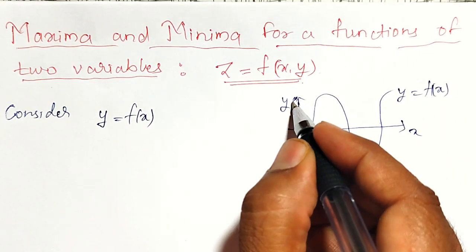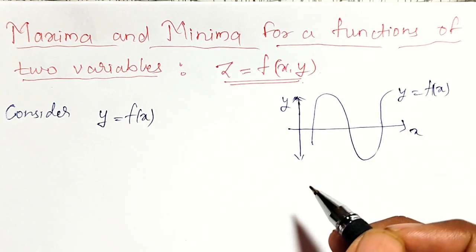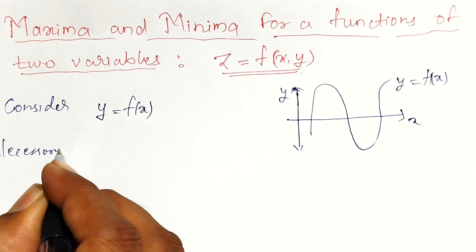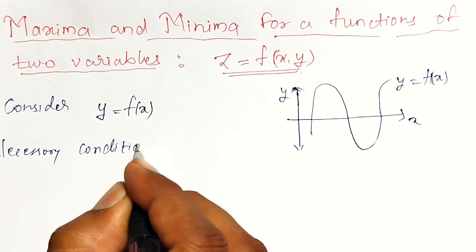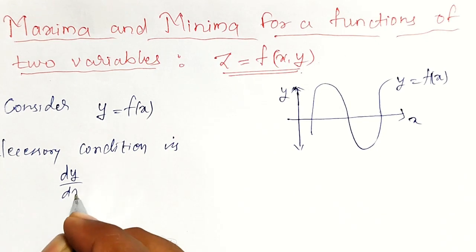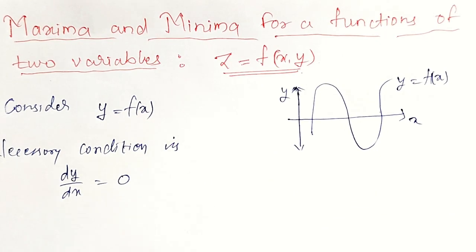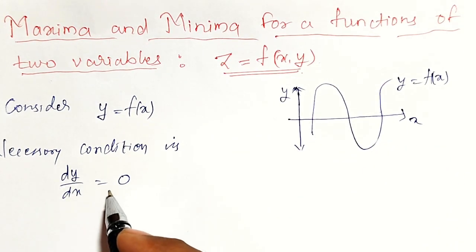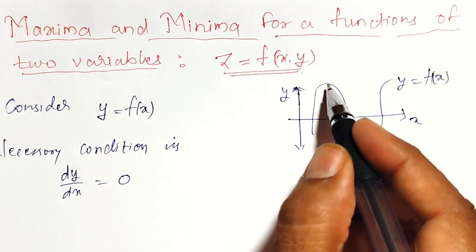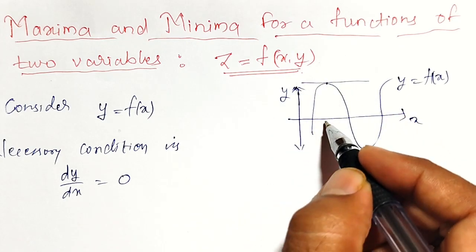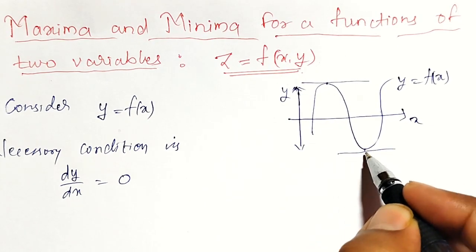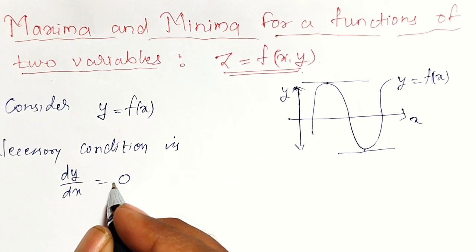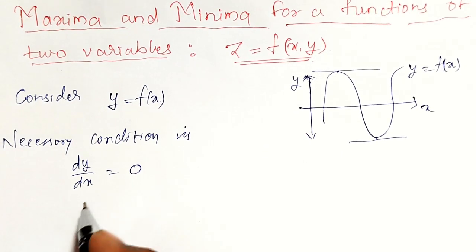To find out the maximum value and minimum value for y equal to f of x, the necessary condition is dy by dx equal to 0. Why dy by dx equal to 0? At the point where dy by dx equal to 0, the slope at that point — the tangent will be parallel to the x-axis. At the maximum point and minimum point, the tangent will be parallel. Therefore, we use dy by dx equal to 0 at that particular point. This is the necessary condition.